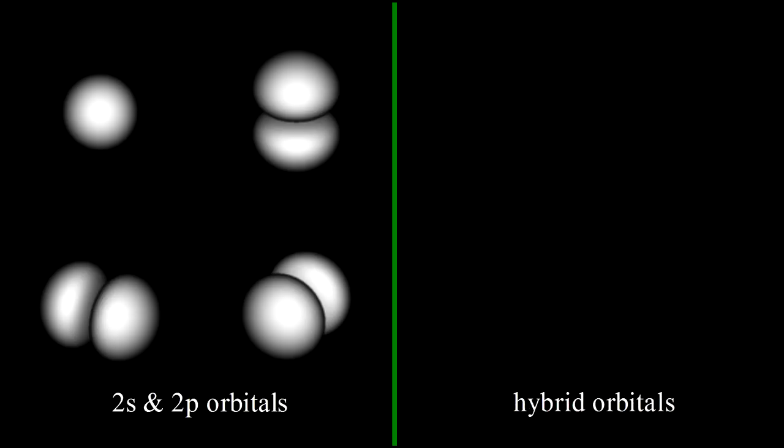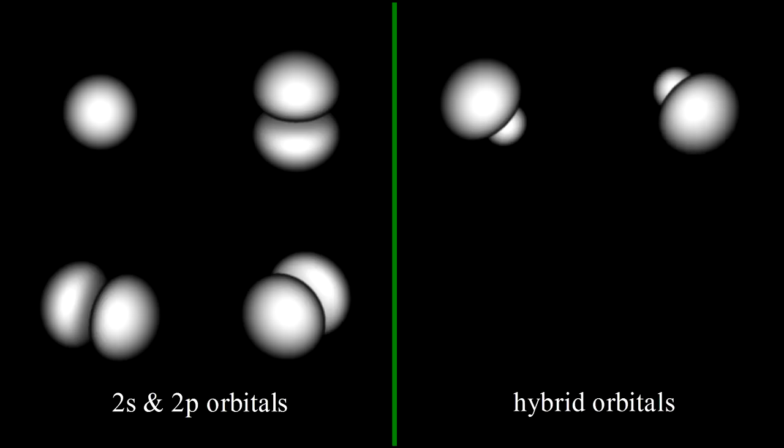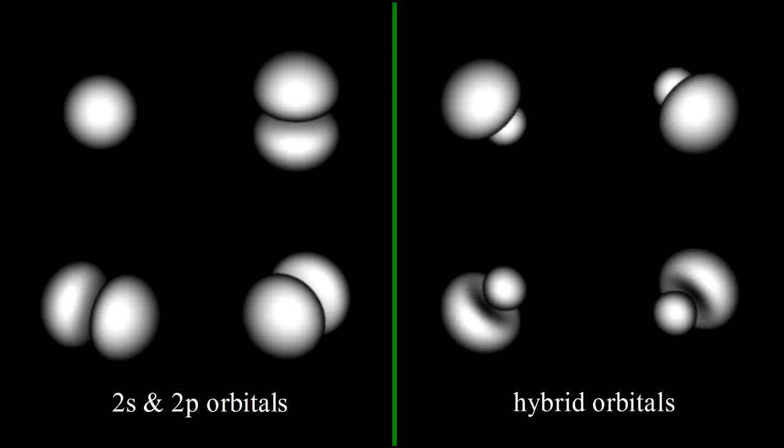If we sum all four of the s and p orbitals, we get an asymmetric shape with a small lobe near the nucleus and a large lobe sticking out in one direction. By negating one or more of the s and p orbitals before summing, we obtain the same asymmetric orbital pointing in different directions. These four hybrids are valid solutions of Schrödinger's equation, and conceivably, in some situations they might be more stable than the s and p orbitals themselves.